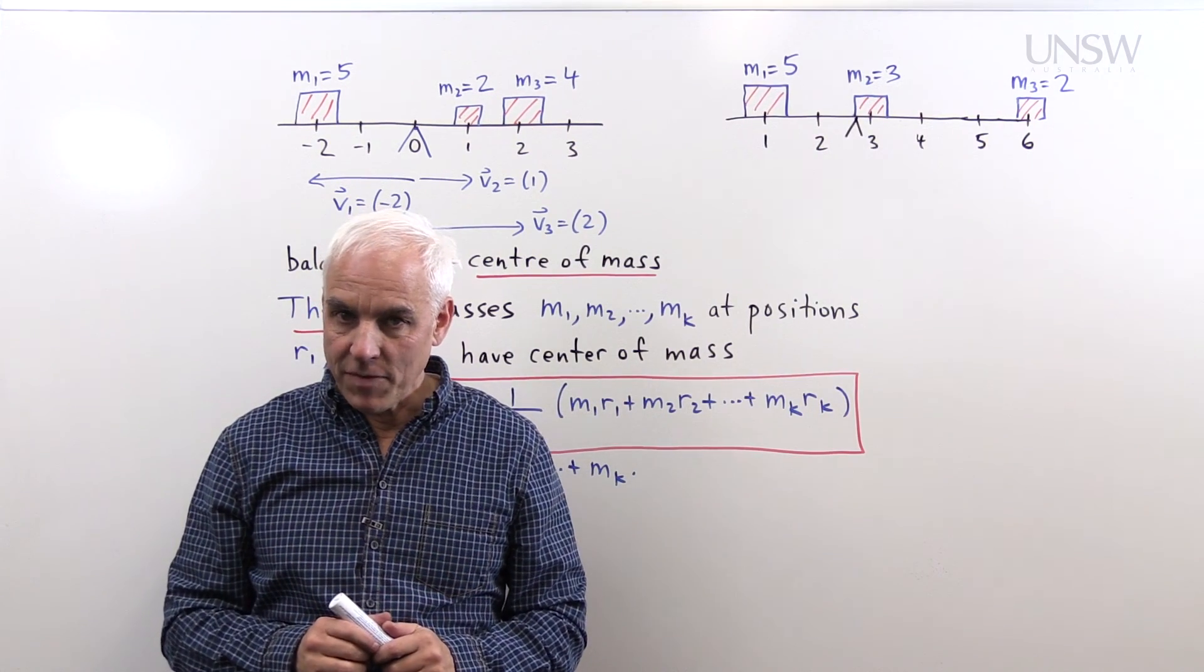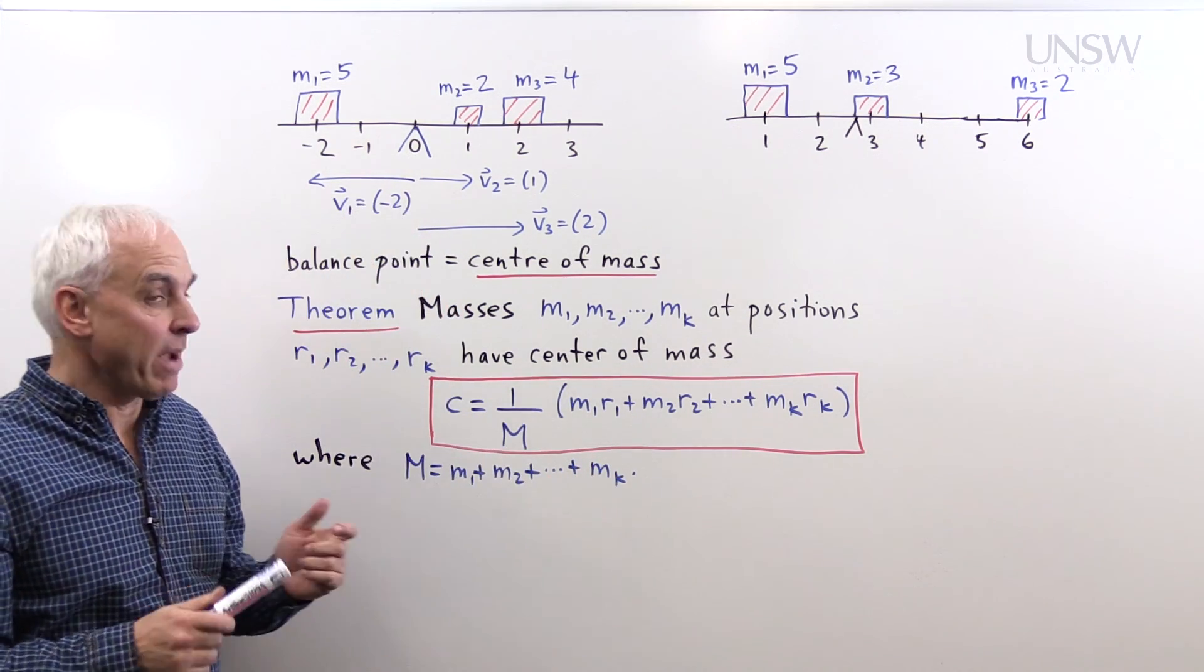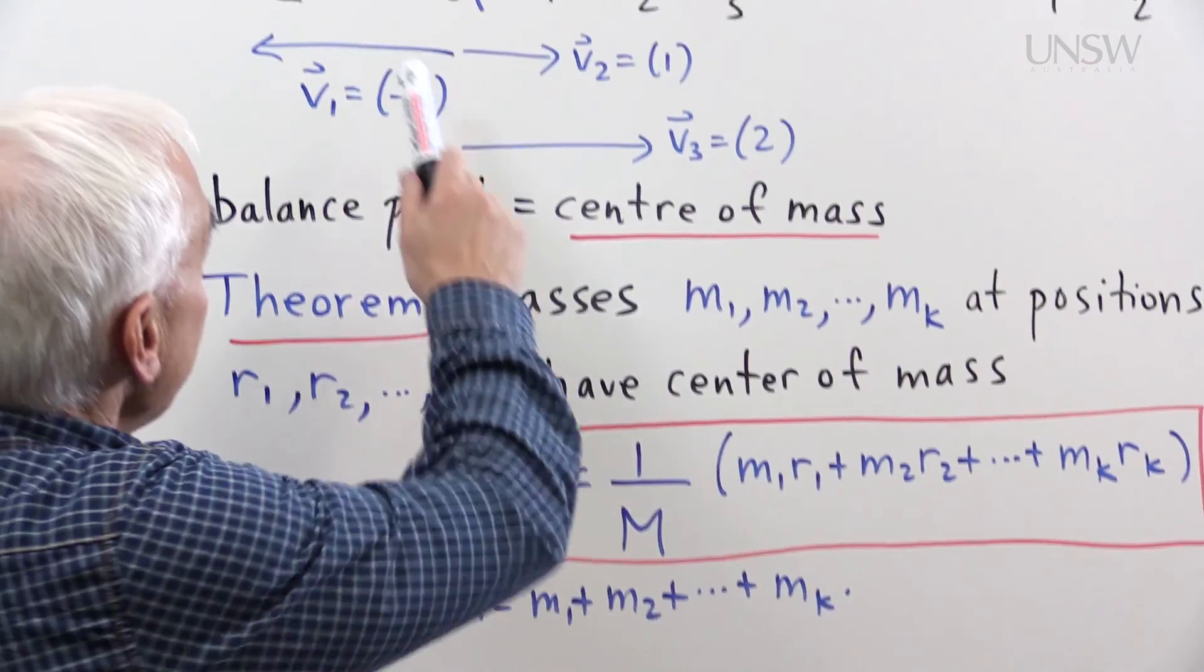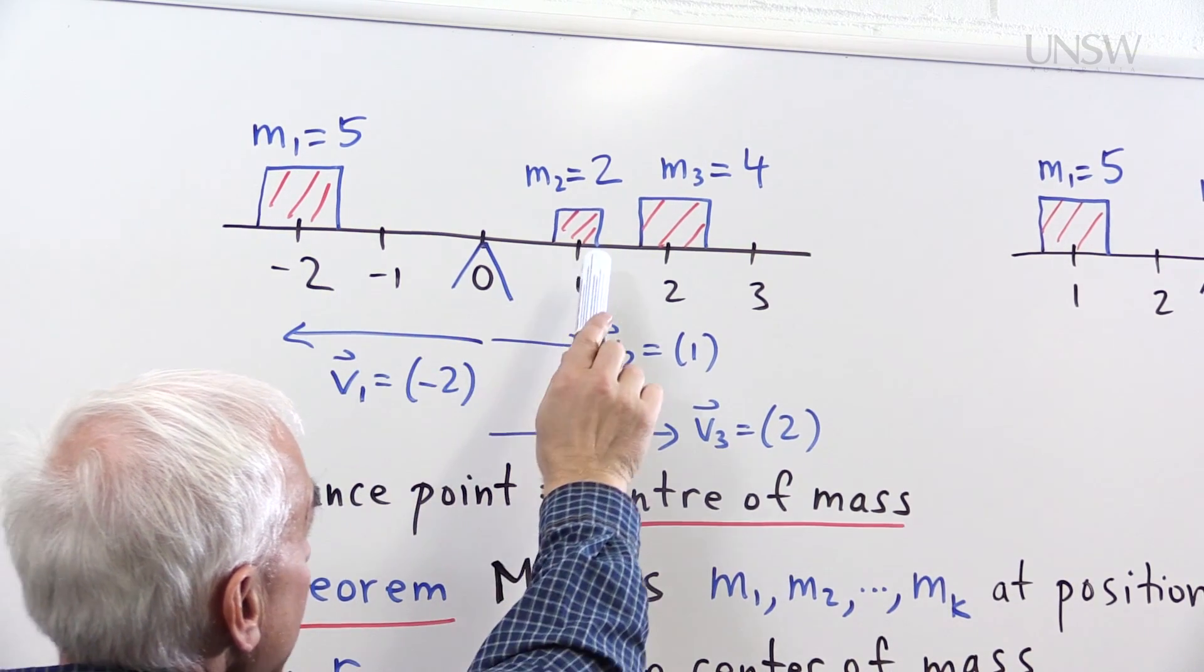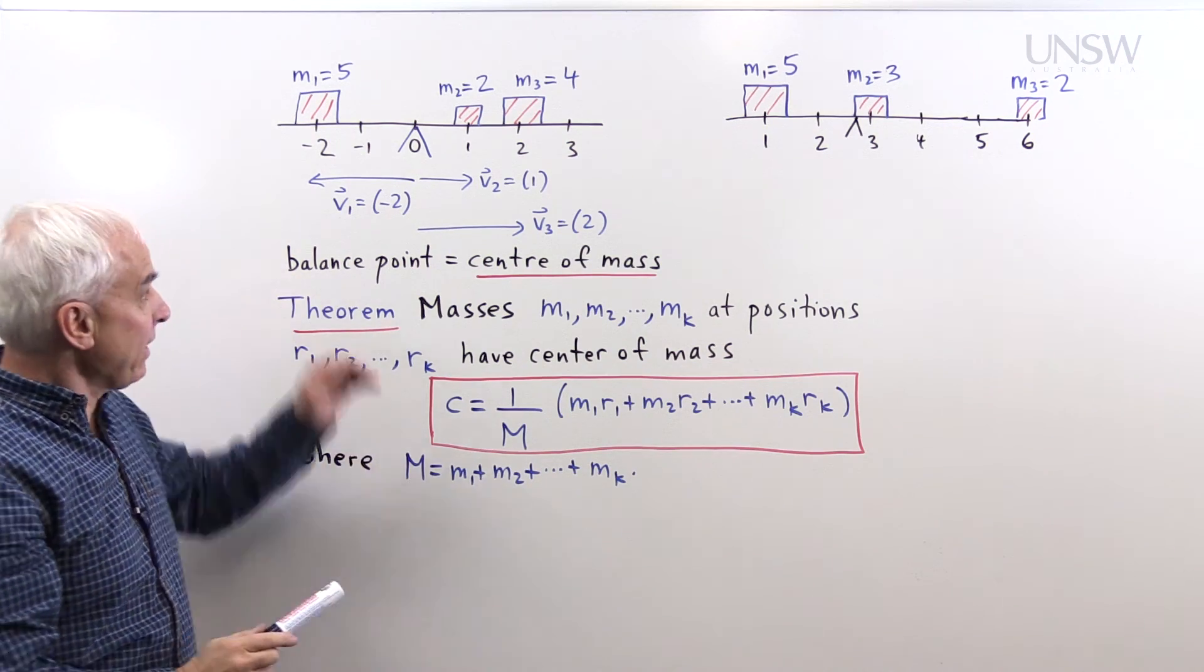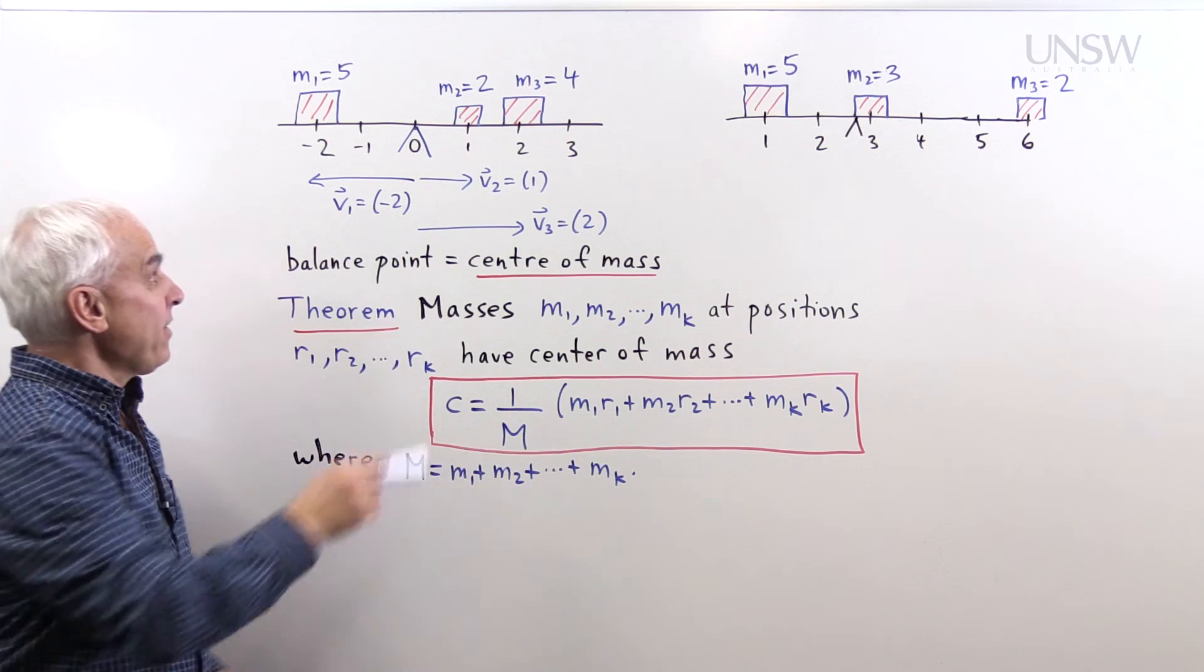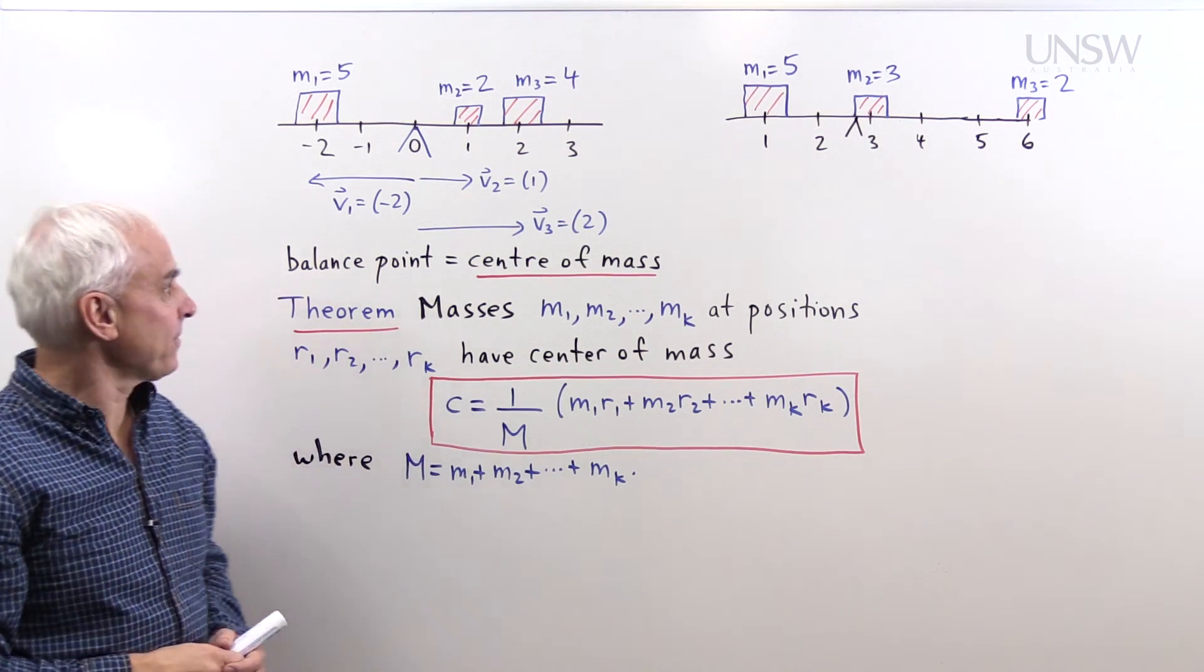Archimedes' law of the lever has many generalizations, very important ones. And a simple generalization is what happens when we have more than two masses on a lever. There's a natural generalization. Here, for example, we have three masses. Five, mass of five at the point minus two, mass of two at the point one, a mass of four at the point two. And if we imagine that the actual lever itself, the axis that we're on, is weightless, doesn't really contribute at all, then the point of balance will be the origin. How can we see that?